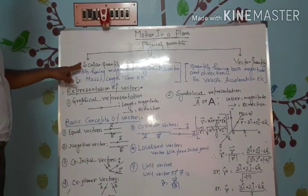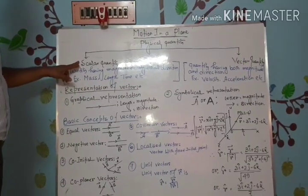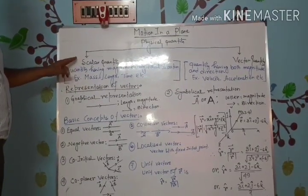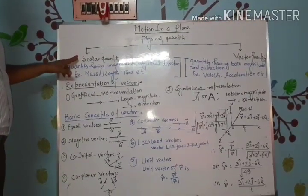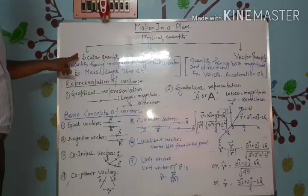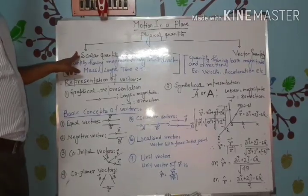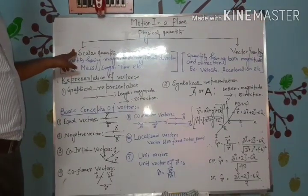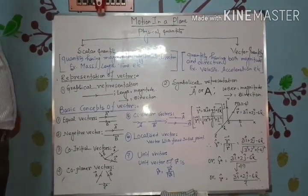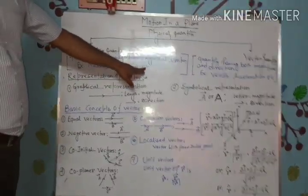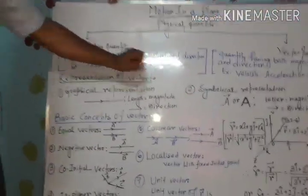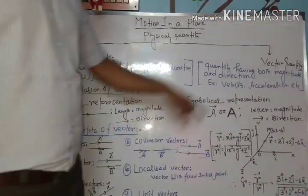Number 1: Scalar Quantity, which has only Magnitude and no Direction. For example, Mass, Length, Time, etc.